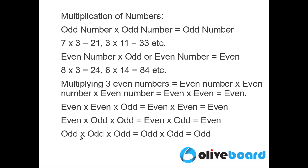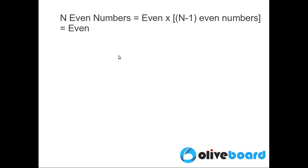Now if we multiply three odd numbers, the product of the two odd numbers is odd, so it's the equivalent of multiplying an odd number with another odd number, resulting in an odd number. Now if we multiply n even numbers, it's like multiplying an even number with n minus 1 even numbers.